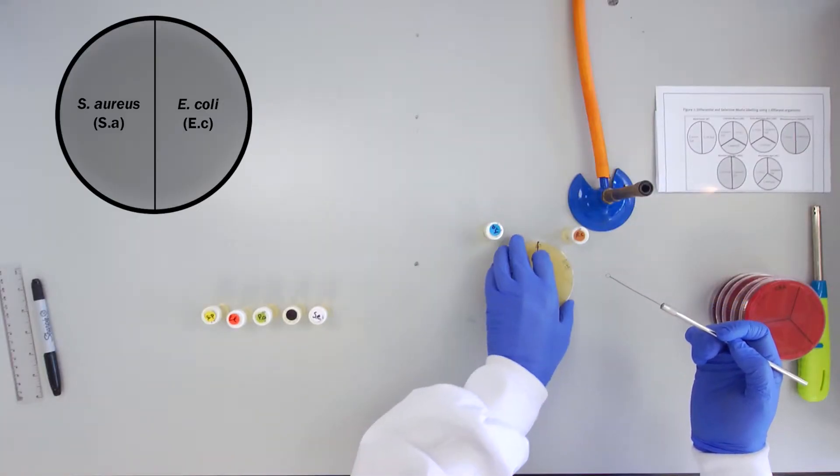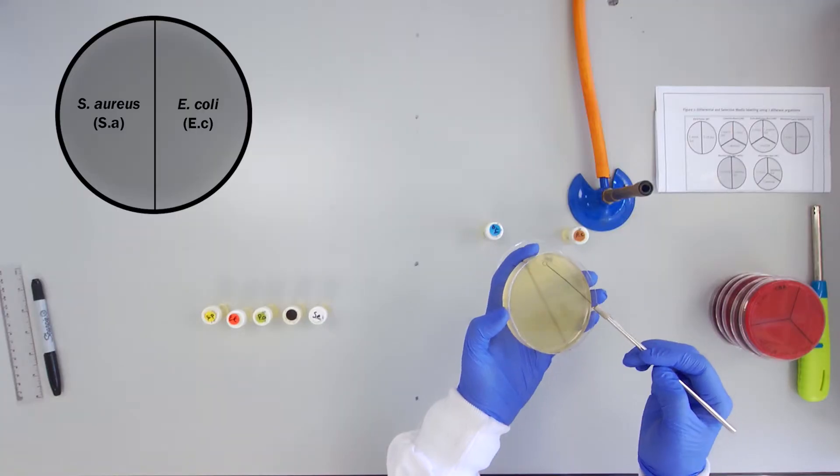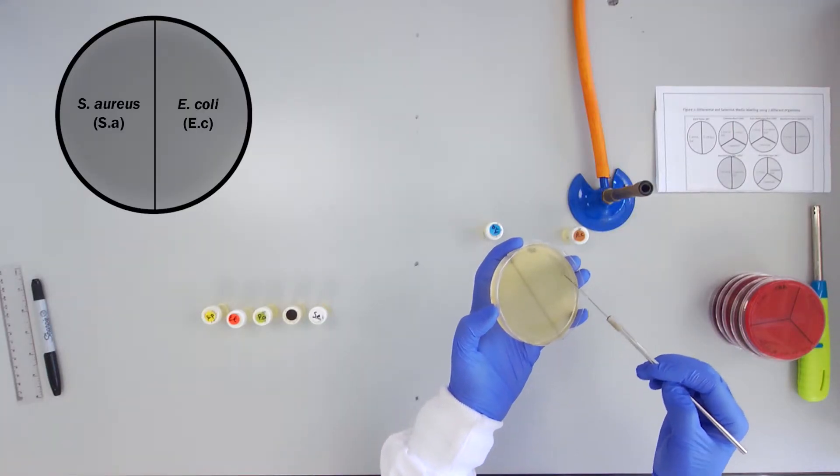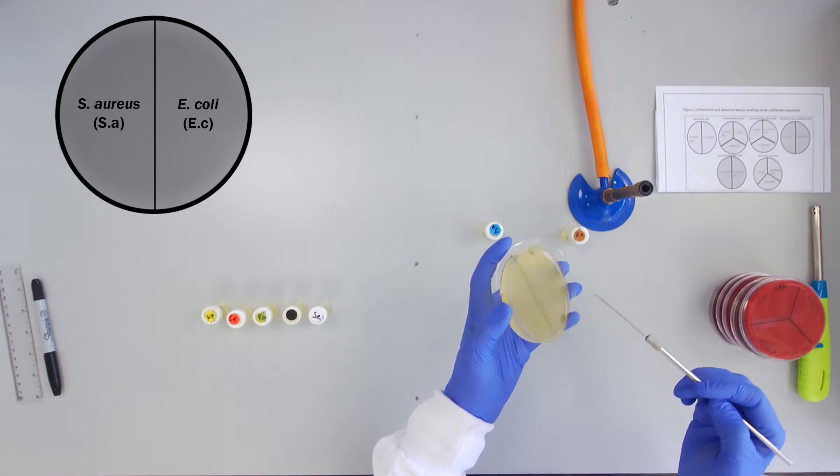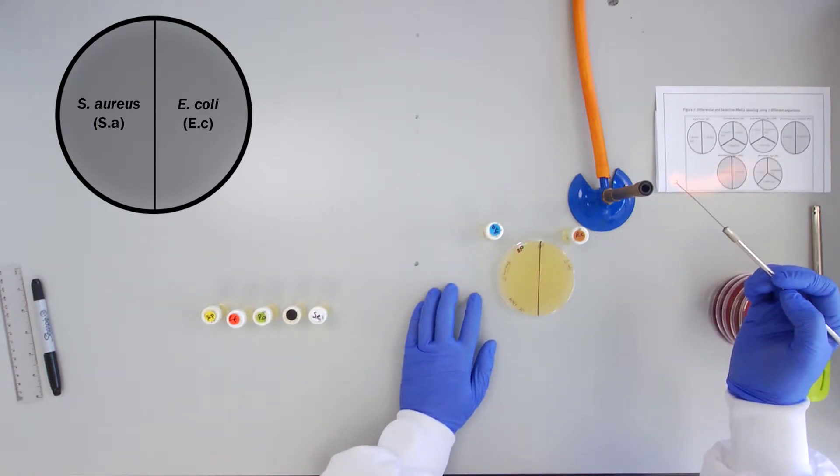Carefully and aseptically perform a single continuous streak of the broth cultures on the appropriate section of each plate. Take care to avoid encroaching on other sections.